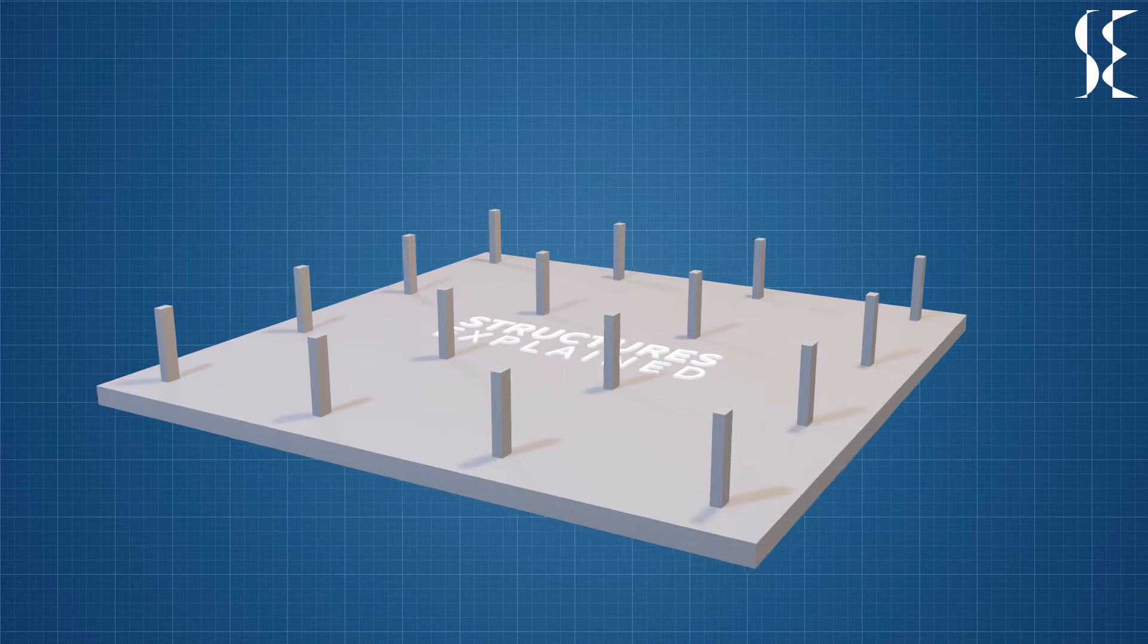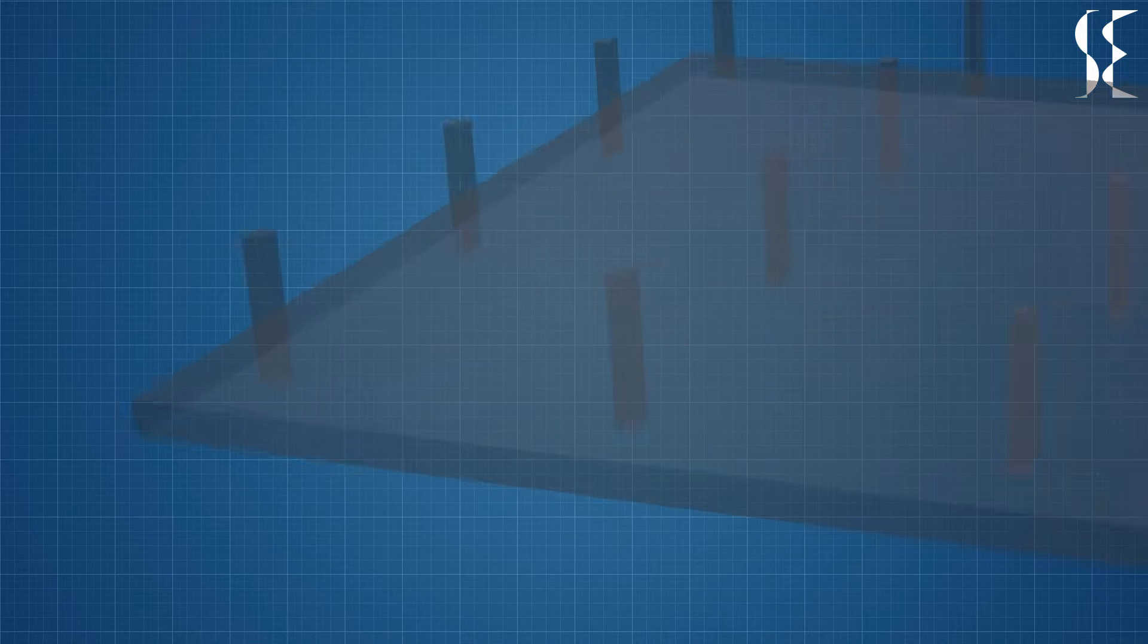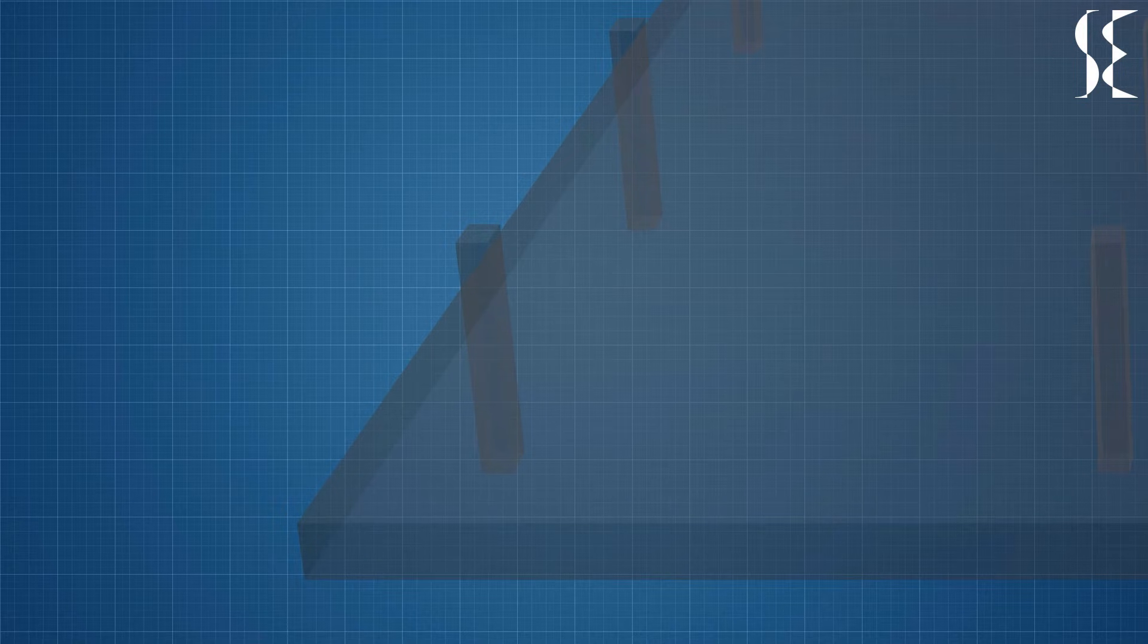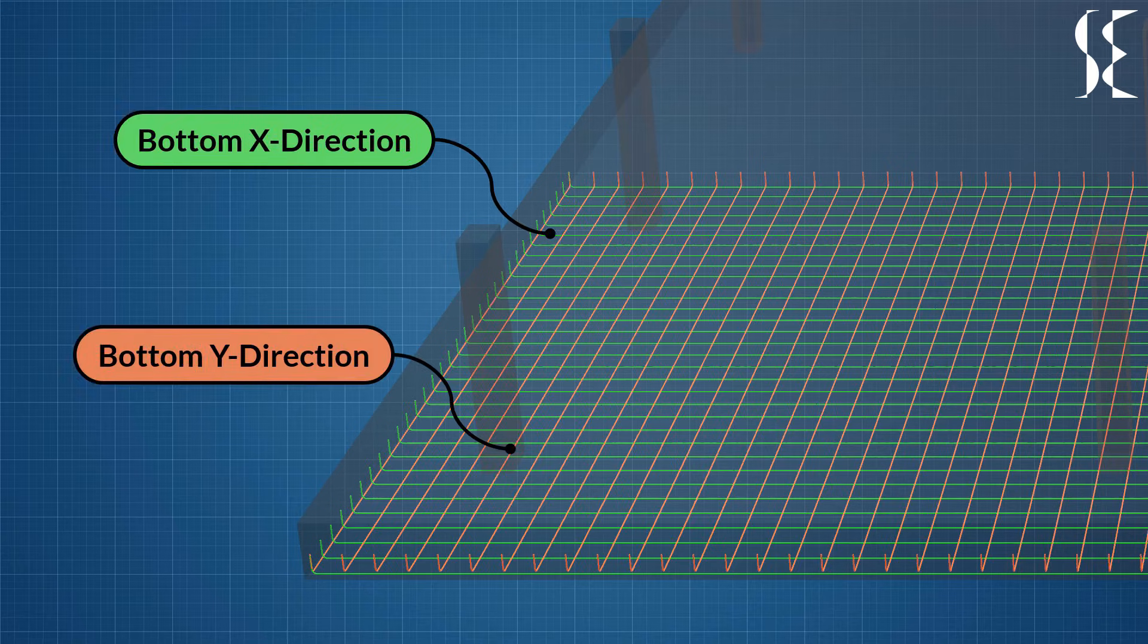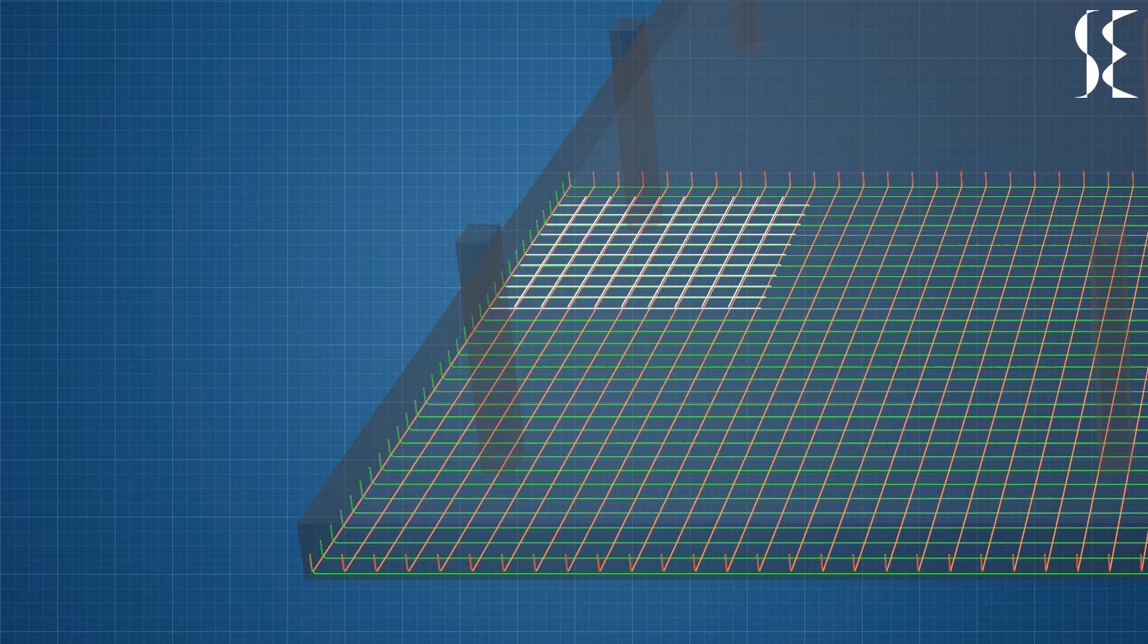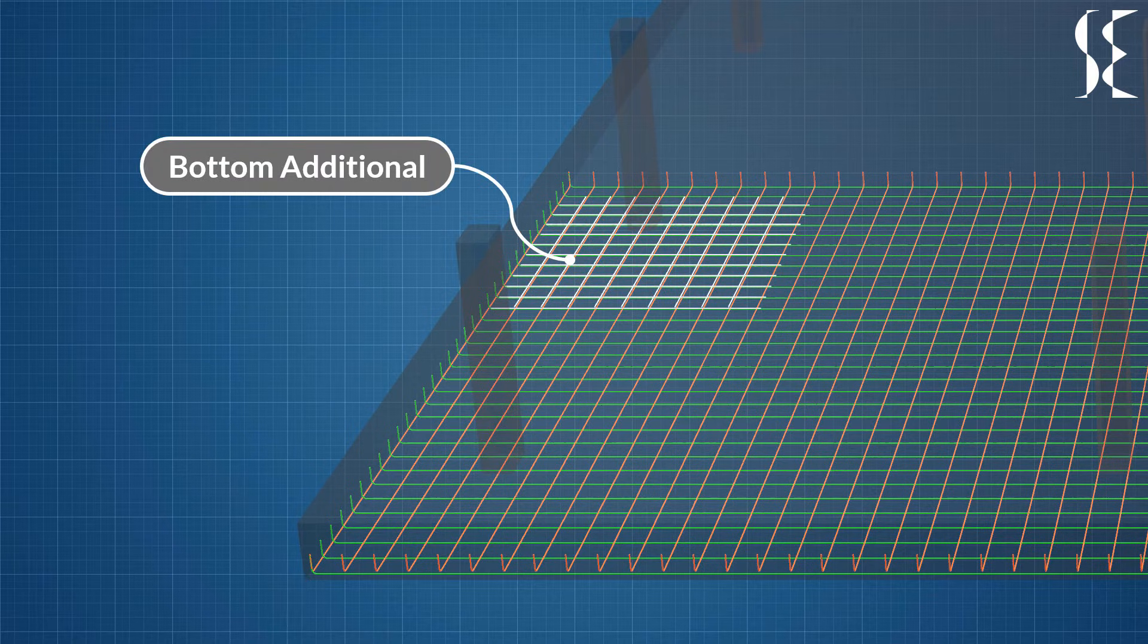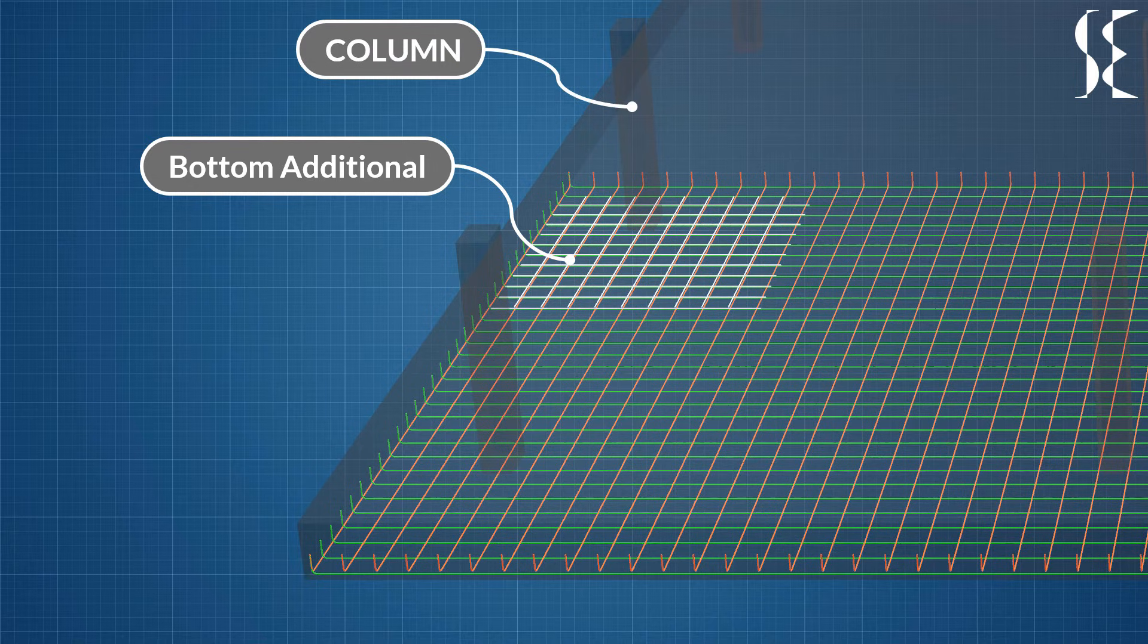Now, let us see the reinforcement distribution in the raft. For simplicity of understanding, we will only look at a part of the raft reinforcement. Starting from the bottom, rafts are provided with a mesh of rebars in both x-direction and y-direction. Generally, bars in both directions have equal spacing and bar diameter but may vary as per design and analysis requirements. Additional reinforcement if required is provided as a layer above the existing mesh. Usually, additional reinforcement is required below the column as positive bending moments are generated below them.